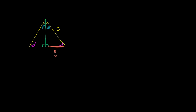And if this length is s over 2, we can use what we know about 30-60-90 triangles to figure out the altitude. The reason why I care about the altitude is because the area of a triangle is 1/2 times the base times the height. The side opposite the 30 degree angle is s over 2. The side opposite the 60 degree angle is going to be square root of 3 times that, so it's square root of 3s over 2. We know that because in a 30-60-90 triangle, the ratio of sides is 1 to square root of 3 to 2.